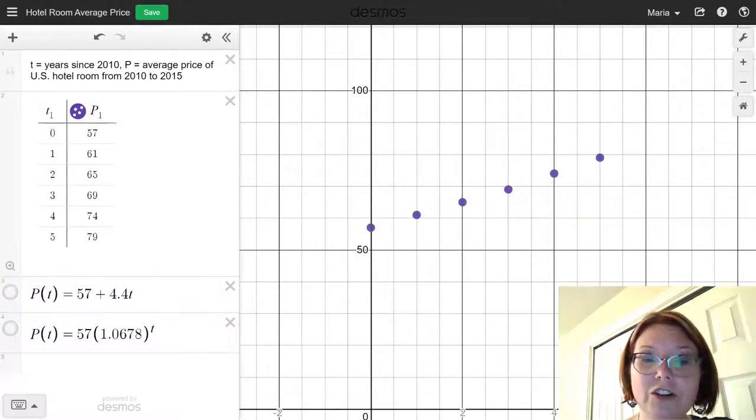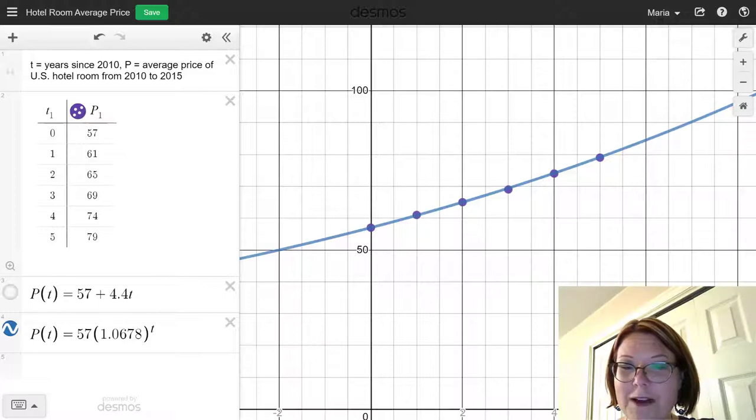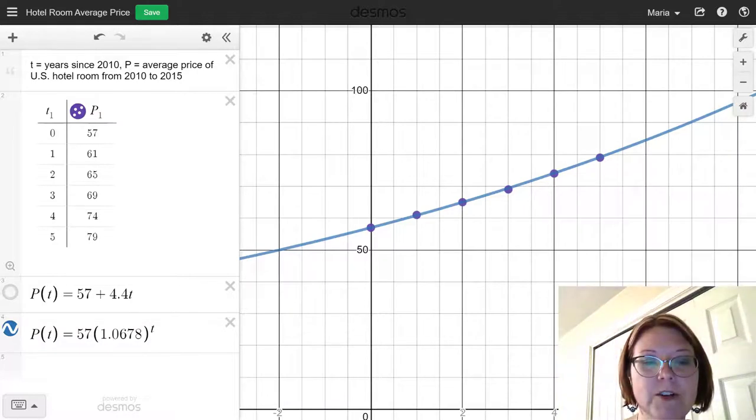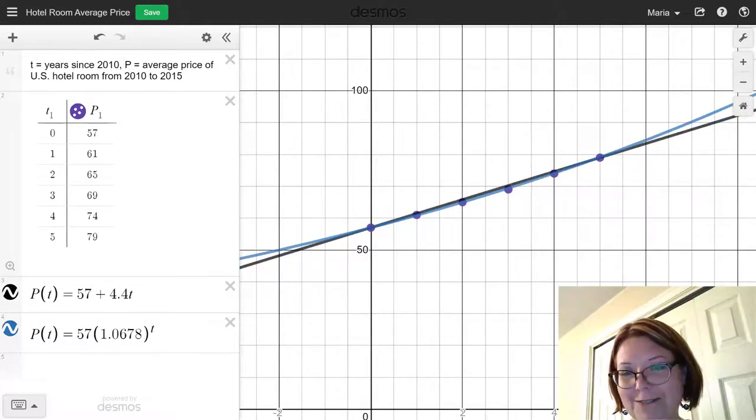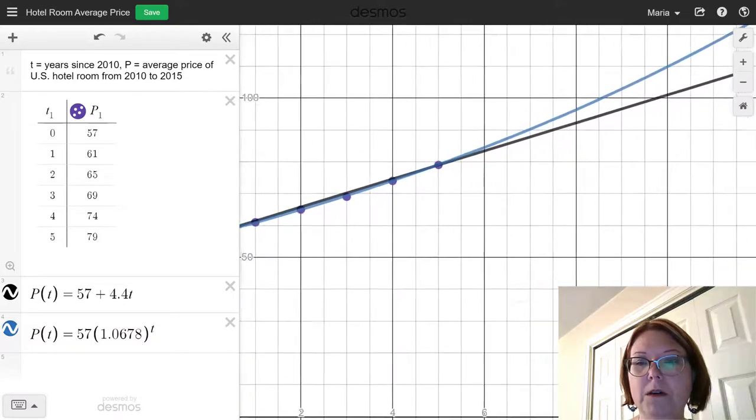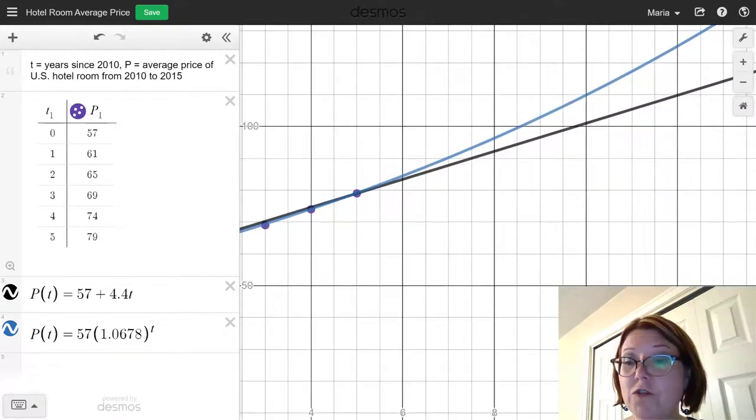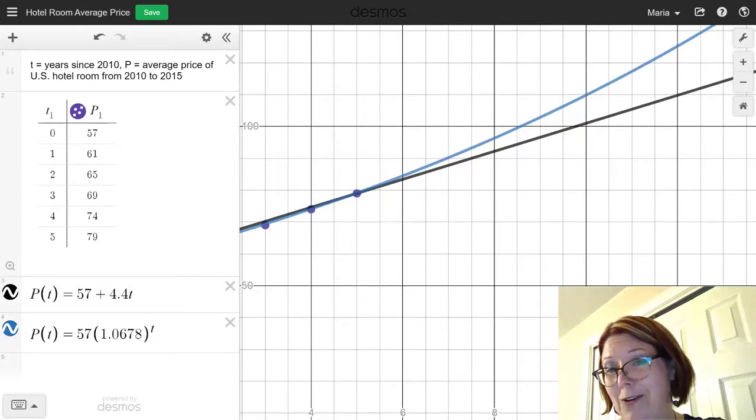I'm going to turn that one off, and turn on the exponential function. To remind you, this one has an initial value of 57, and a growth factor of 1.0678. Again, this looks like it's an excellent fit for the data. Every single point touches this model. It's very hard to say which one of these is correct. If I turn them both on, you can see there's very little difference between the graphs in this set of data points. When you move to the right, however, you will find that the exponential function grows a bit faster than the linear one, which is to be expected. If our projection was faster and faster growth, we'd probably go with an exponential model here. If we thought we would have slow, steady growth, a linear model might make more sense.